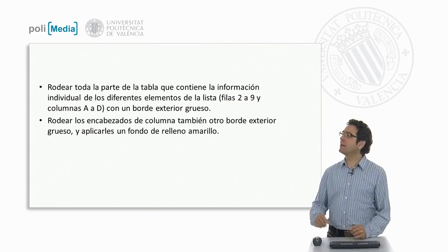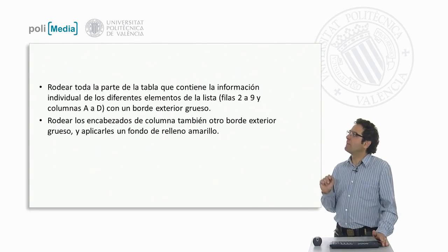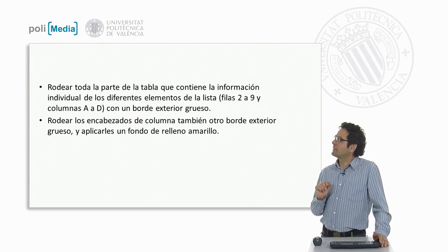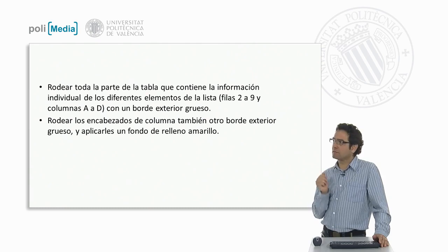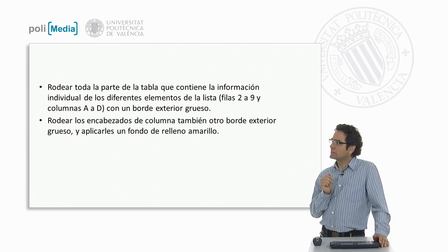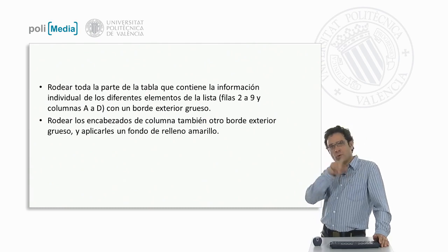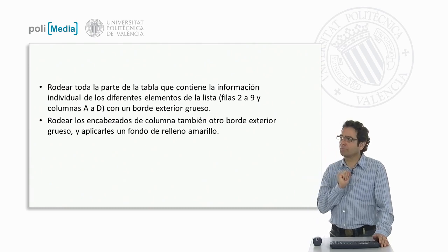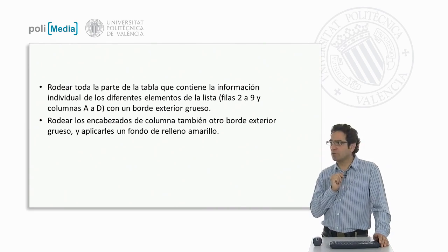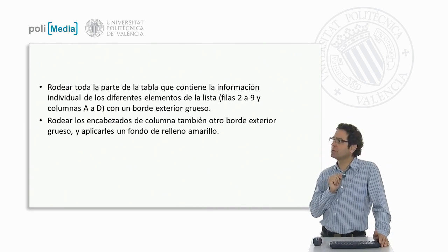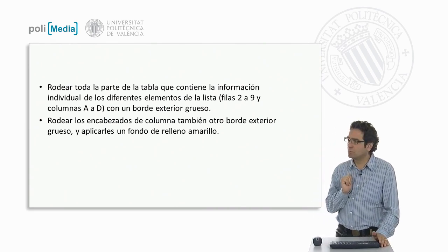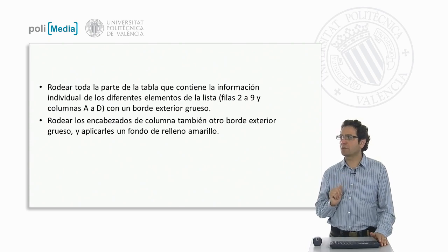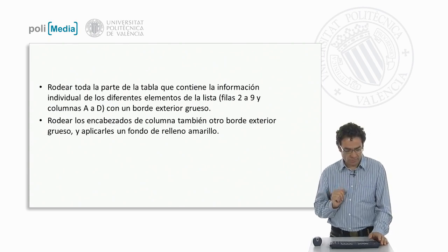They are asking us to surround the part of the table that contains individual information on the different elements of the list — that is, rows 2 to 9 and columns A to D — with a thick outer border. We also have to do the same with the headers: not only add another thick outer border, but also add a yellow background fill.